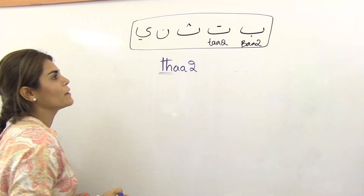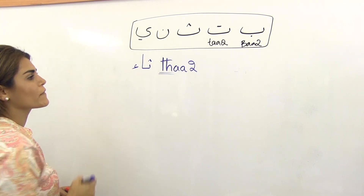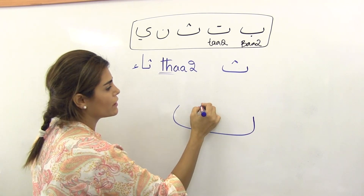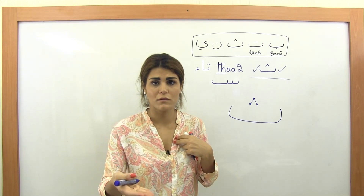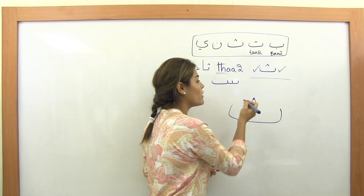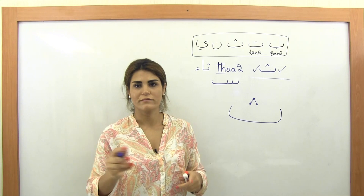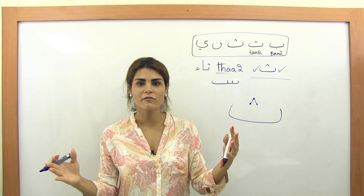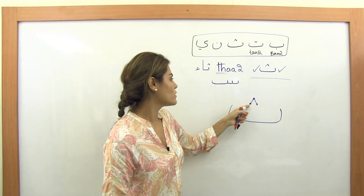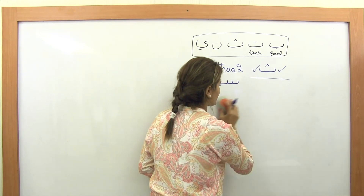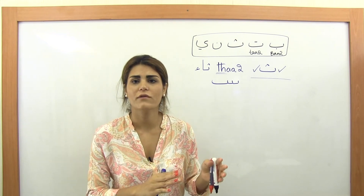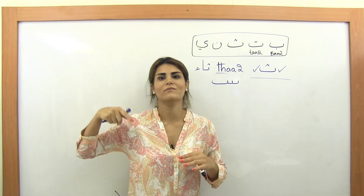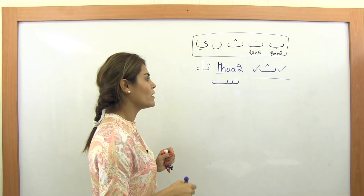The third letter is Tha — transliteration 'th.' I write it with a hat shape. It's based on three dots, but I connect them together as a hat to eliminate confusion when writing fast. This is the most commonly used handwriting style, not just my personal style. Putting three individual dots can lead to forgetting one and accidentally writing a different word, so the hat is strongly advised.